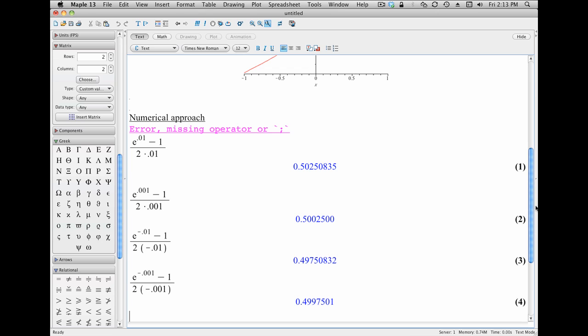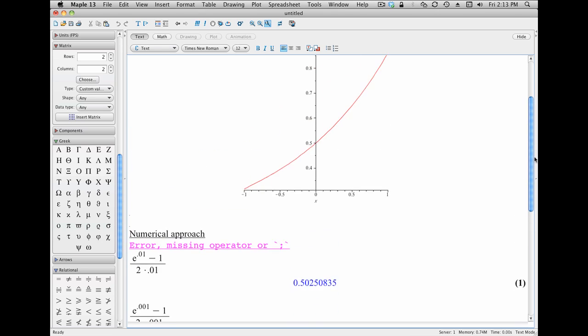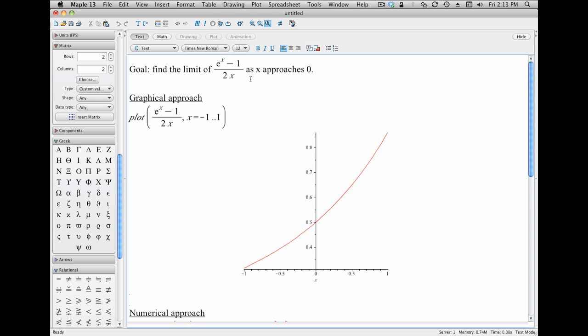So in other words, we're getting some good informal evidence that as we get closer and closer to 0, this quantity gets closer and closer to 0.5.